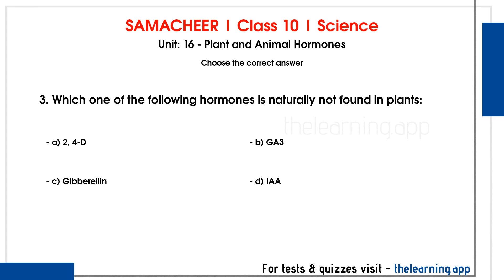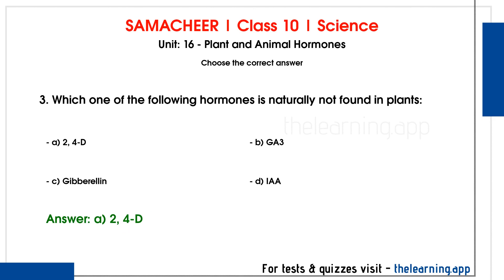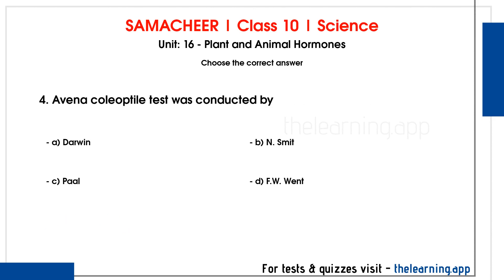The naturally secreted auxin is called IAA. The artificially synthesized auxin is 2,4-D. That is the correct answer, option A. Fourth question: Avena coleoptile test was conducted by dash. Options are A) Darwin, B) N. Smith, C) Paul, D) F.W. Went.